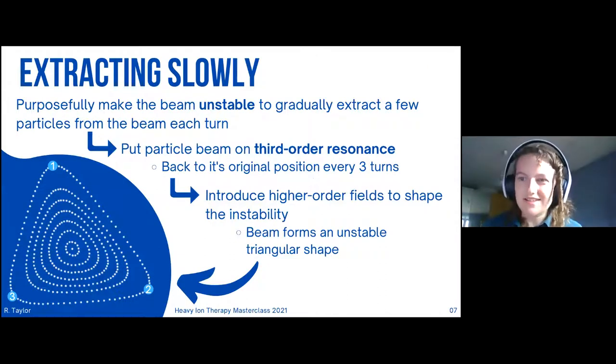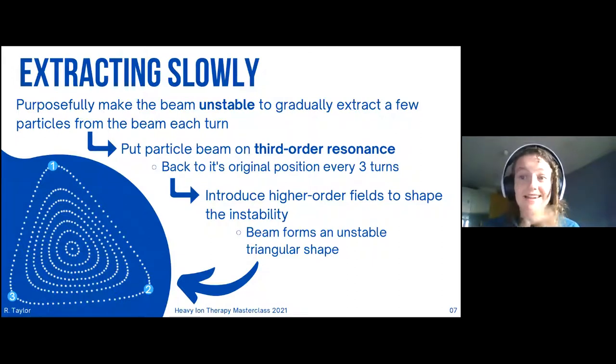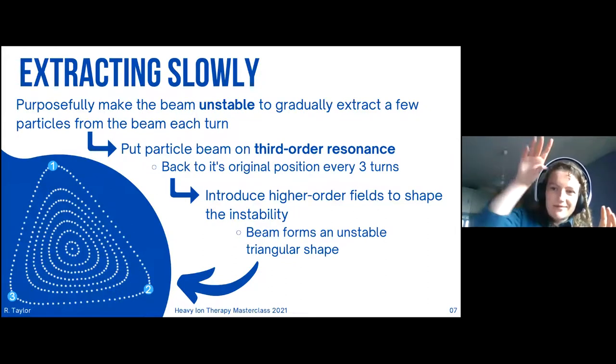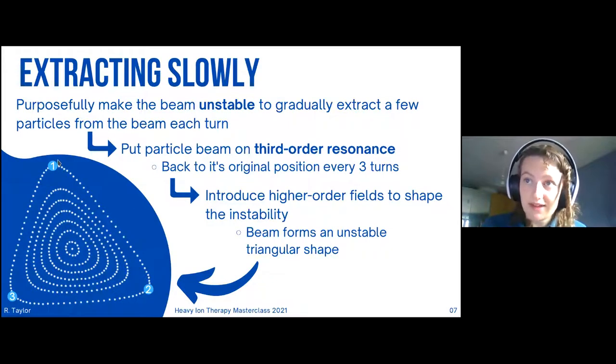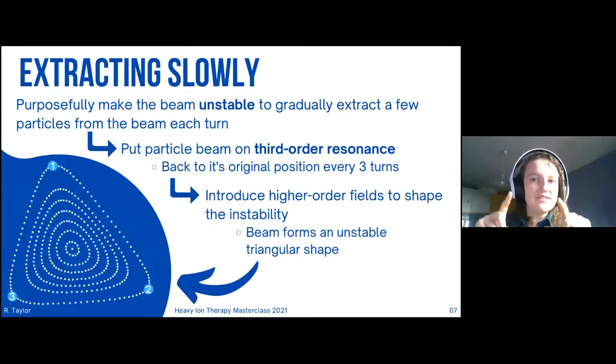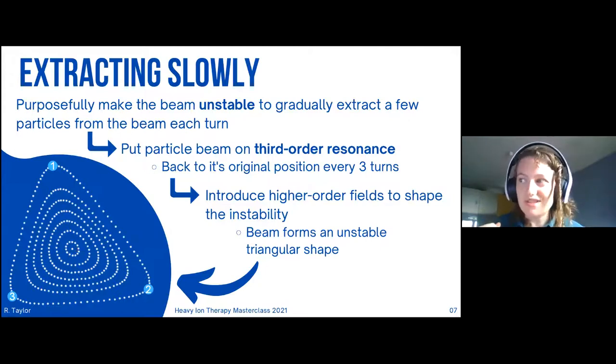For slow extraction, it's a bit more difficult. We purposefully make the beam unstable—we want to shake it up so that we're gradually just extracting a few particles each turn. To do this, Eleanor mentioned for injection you have a quarter resonance. Here we're putting it on a third order resonance, which means we have a third integer tune. Marius mentioned tune beforehand. This means that the particle returns to its original position every three turns. The particle will start off here, after one turn jump over here, next turn jump over here, and then finally returns back to its original position. When it does this, it forms a triangular shape. The beam at the center with small amplitude is very circular, and the larger you go out, the more triangular the beam forms.